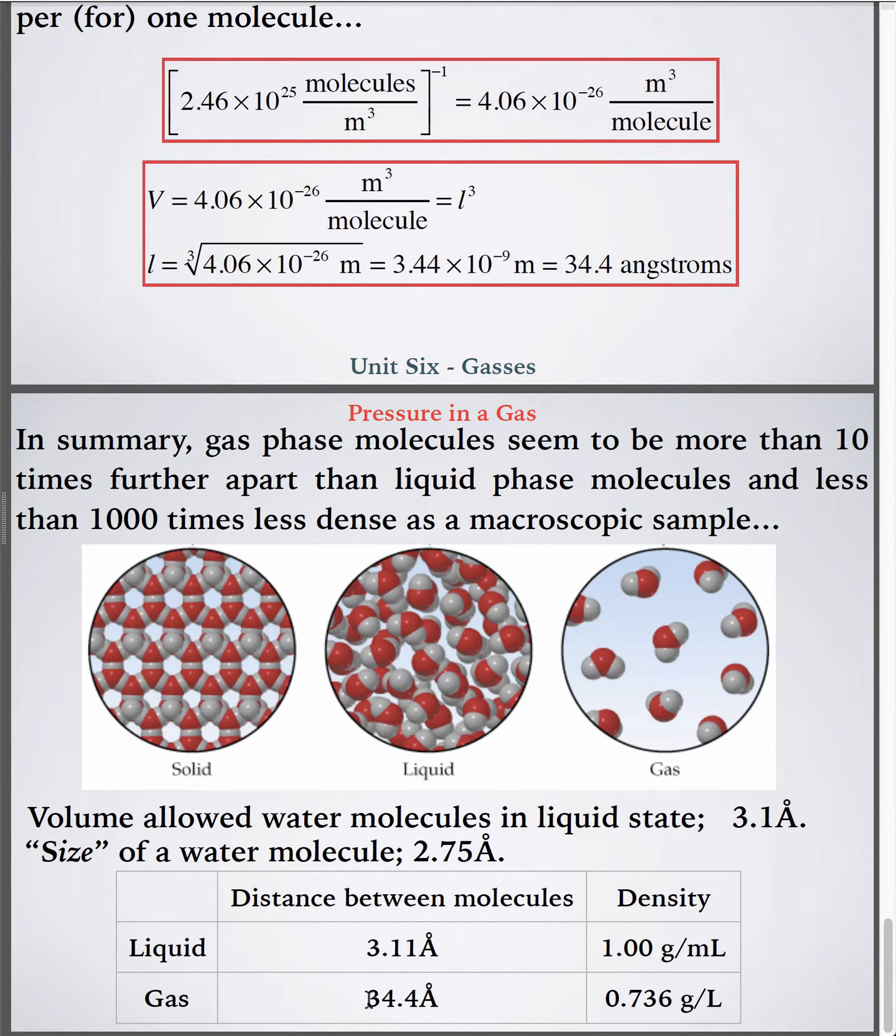And for a gas, similarly, it's 34 angstroms. So, more than 10 times more space in between the molecules. Interesting.